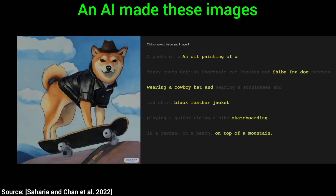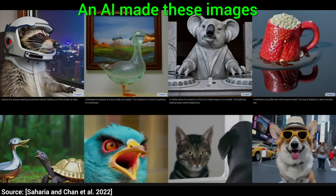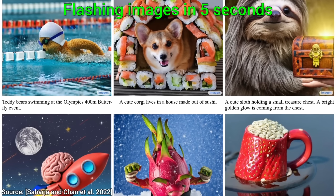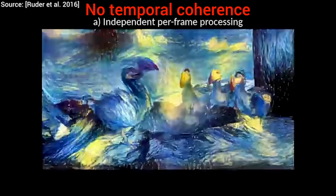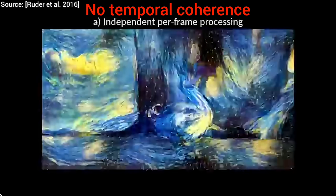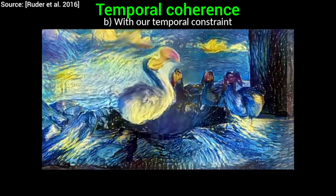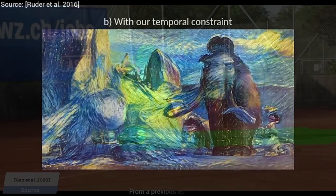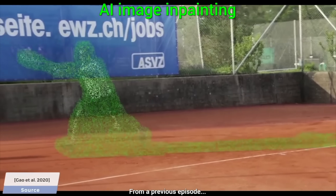What is temporal coherence? This means that a video is not just a set of images, but a series of images that have to relate to each other. If the AI does not do a good job at this, we get flickering. As all of this is so hard, we might be able to do this maybe in 5-10 years, or maybe never. Well, scientists at Google say not so fast.